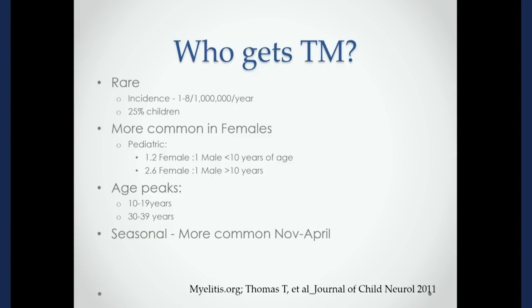So there may be some hormonal effects in the disease. Before puberty or less than 10 years of age, it's only just 1.2 females to every one male affected. Whereas after 10 years of age or after puberty, it's more like 2.6 times more common in females than in males. It can occur across the age span — we see it in babies and in older adults — but there are two particular peaks: between 10 and 19 years of age and between 30 and 39 years of age.